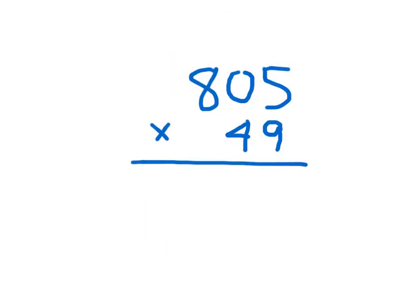Here we have 805 times 49. Starting with the 9: 9 times 5 is 45 — place the 5 and regroup that 4 into the 10s place. 9 times 0 is 0, plus 4 is 4. And 9 times 8 is 72. Cross out the 4 regroup.